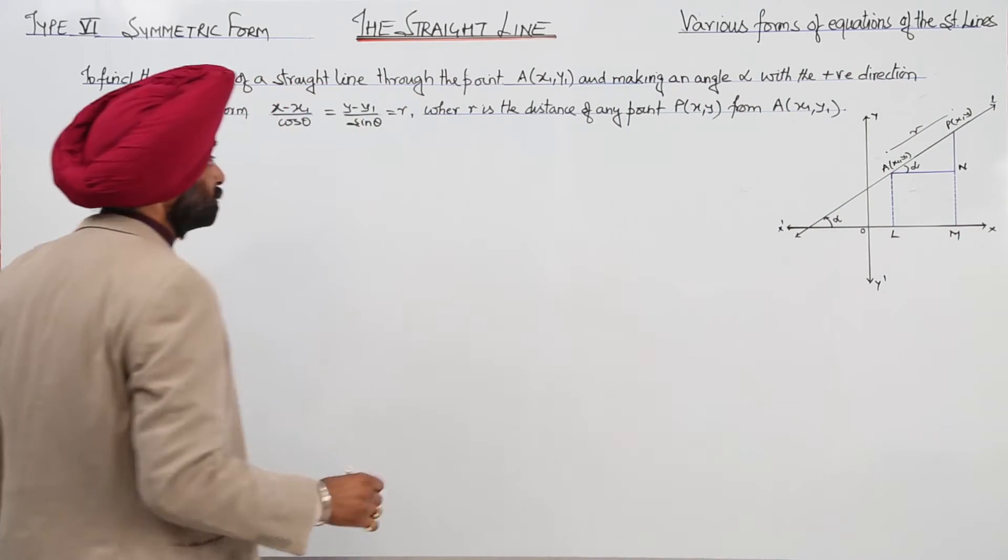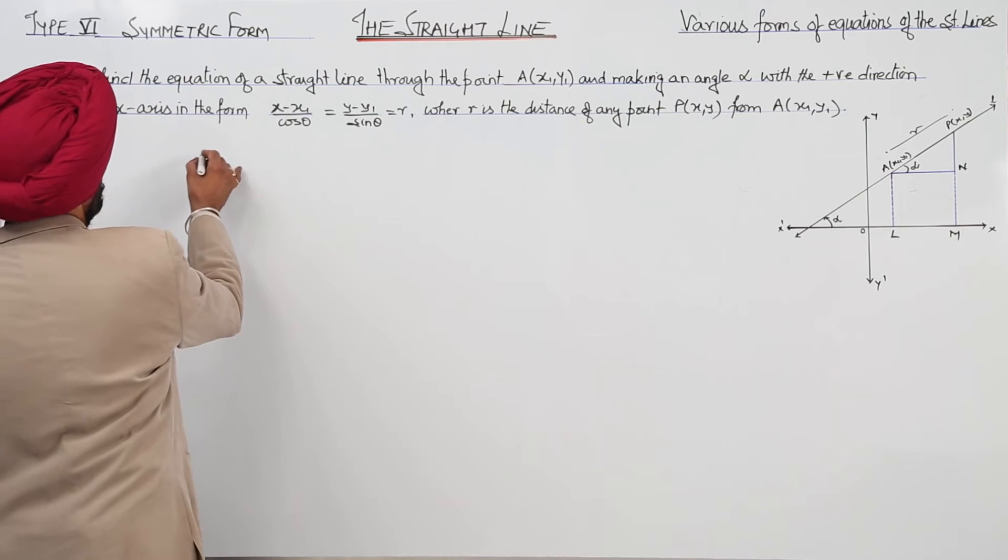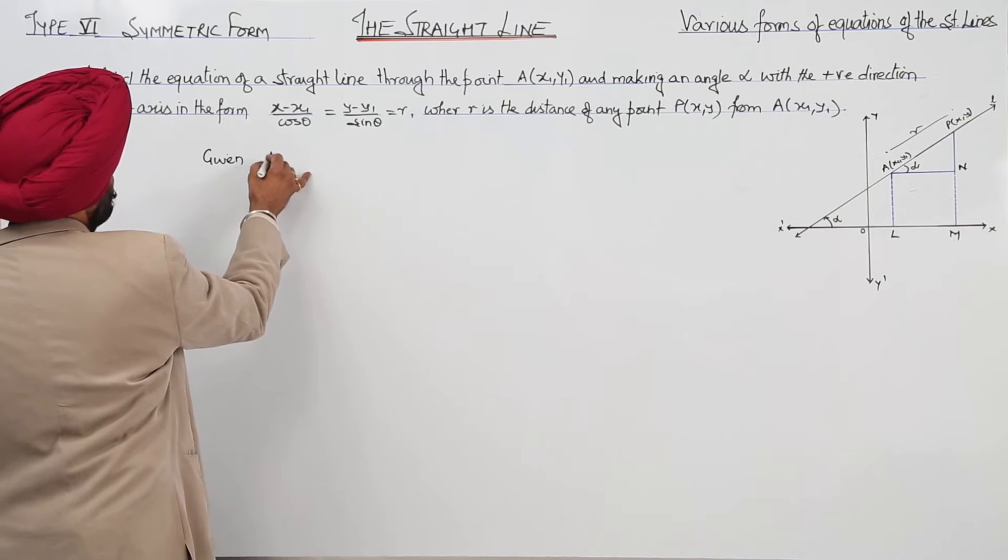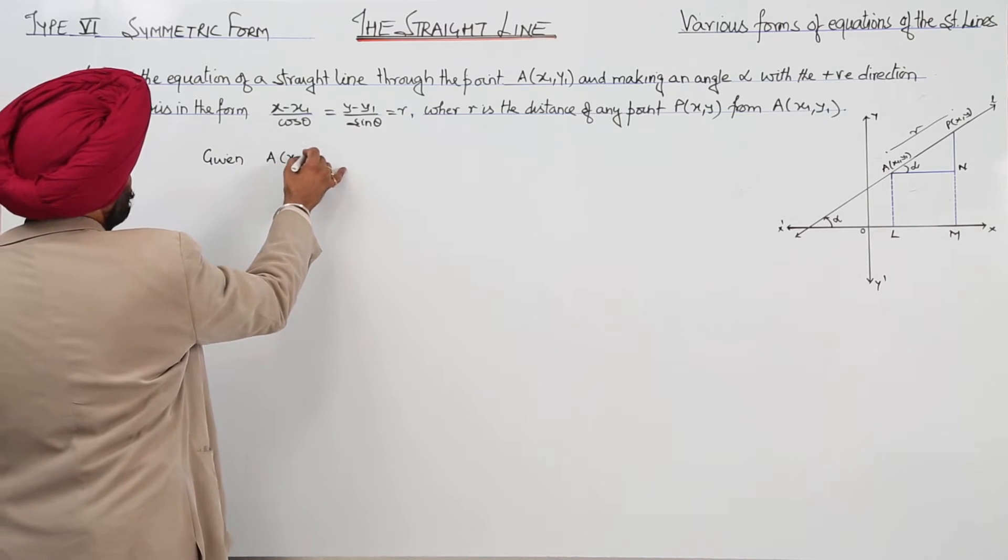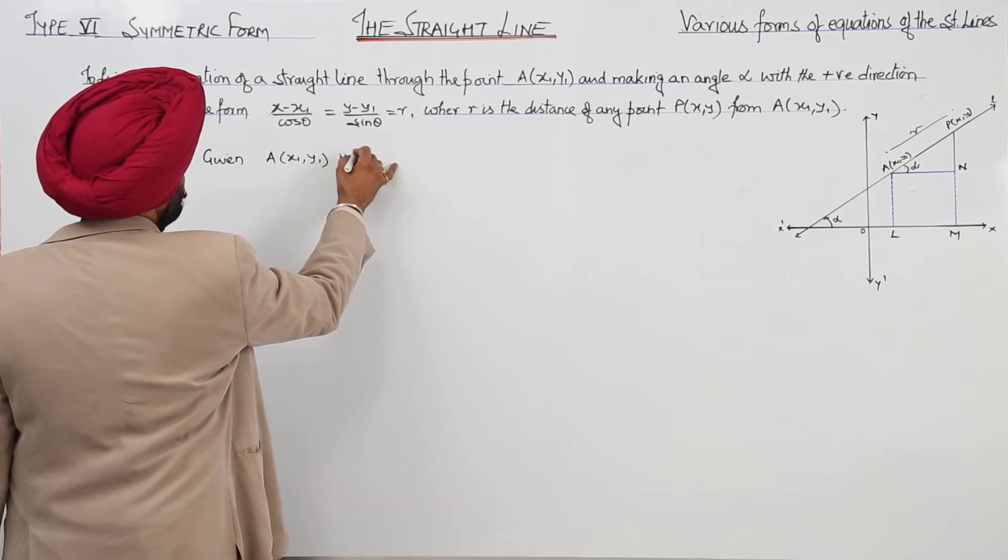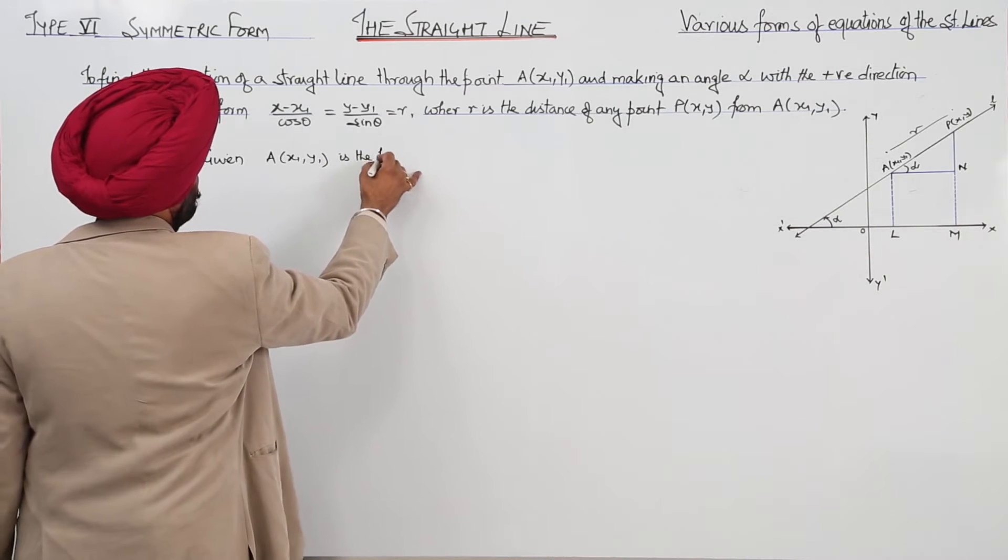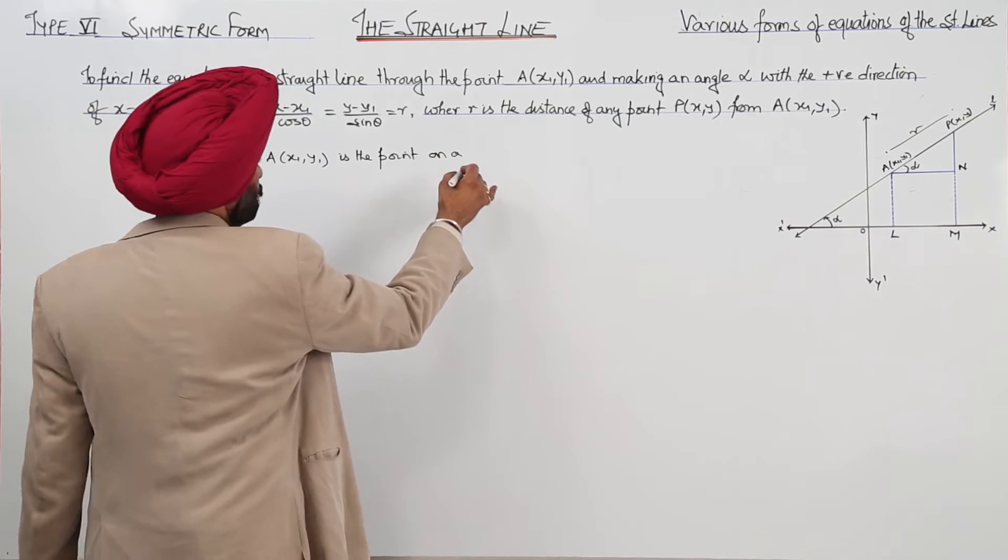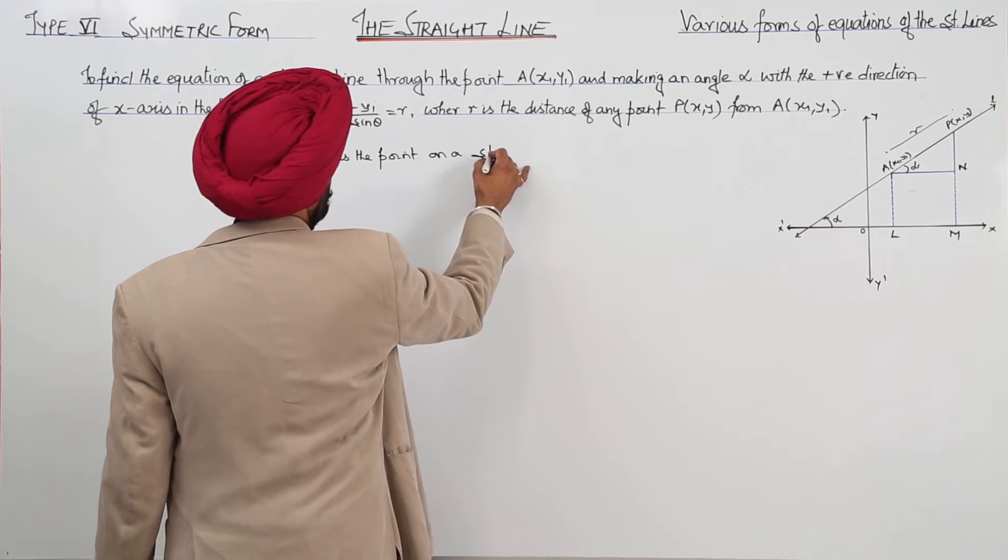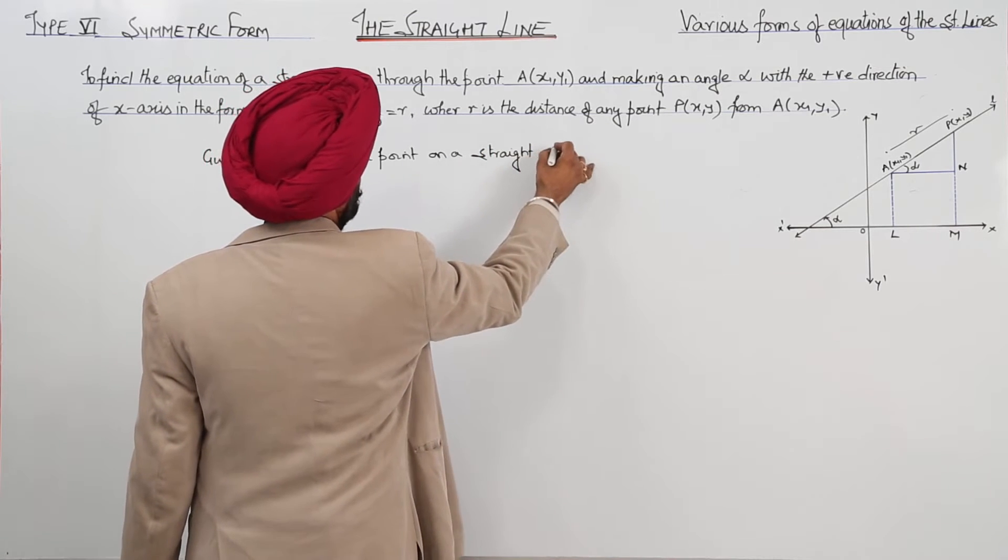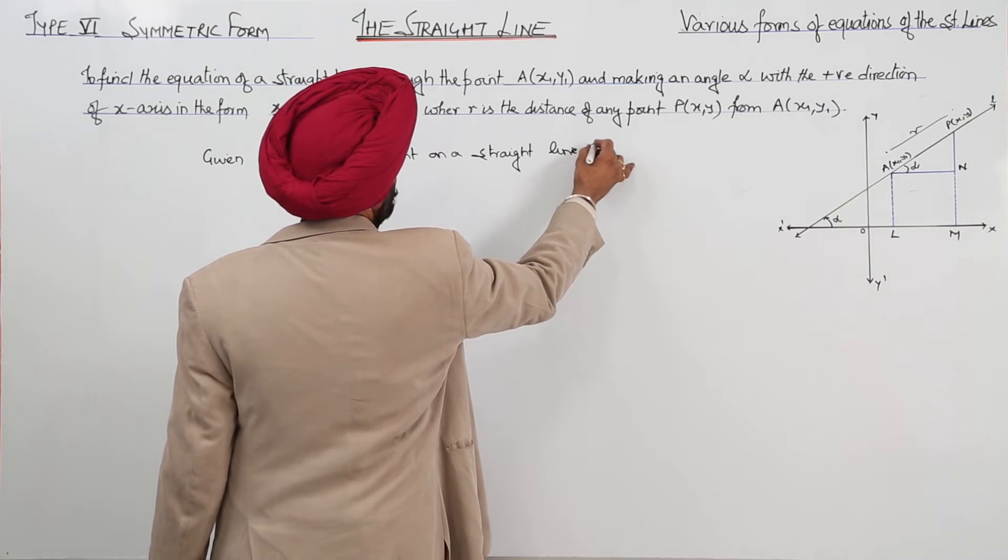Now, given A at x1, y1 is the point on a straight line L.